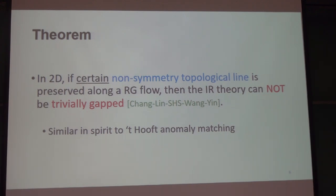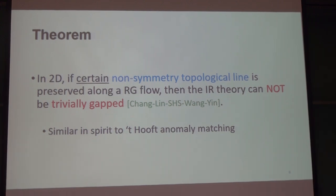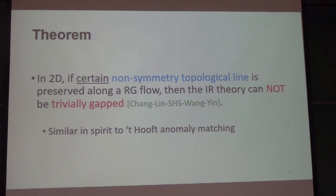The nature of this theorem is very similar in spirit to the 't Hooft anomaly. Typically, if you have a global symmetry that has a 't Hooft anomaly, then in the IR the theory cannot be trivially gapped, because there have to be certain degrees of freedom to reproduce the anomaly from the UV. There is a definitive way to say whether a line is preserved or not, though I actually deleted that slide from the talk. Can you tell whether one of these non-symmetry operators is preserved? Yes — I will address that later on.